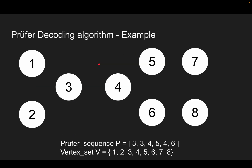Let's take an example. We initialize the sequence P as the Prüfer sequence 3, 3, 4, 5, 4, 6. We initialize the set V as the vertex set containing from 1 all the way to 8. We initialize the tree as 8 isolated vertices.